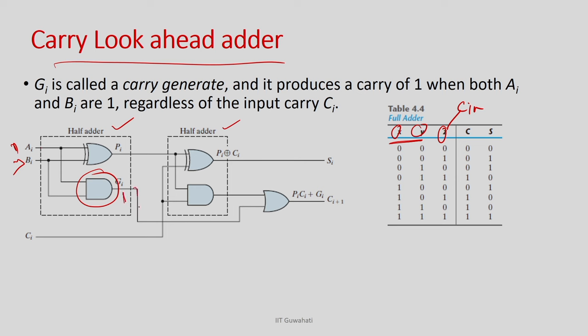Counting the gate levels: 1 level for the half adders, 2 levels in the carry lookahead generator (AND then OR), and 1 more XOR level for the sums — giving a maximum of 4 gate levels total. So any path has a maximum delay of 4 units, which is constant and does not grow with n. This is the carry lookahead adder, overcoming the ripple carry problem.